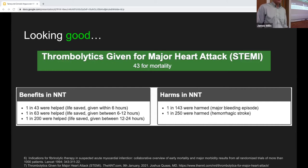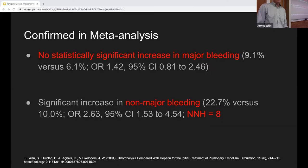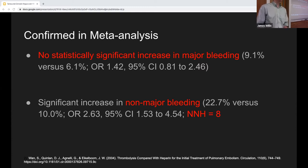A meta-analysis by Wang confirmed this for both massive and submassive PE patients — there was no statistically significant increase in major bleeding with TPA, though there was a significant increase in non-major bleeding. The number needed to harm for non-major bleeding was 8, meaning you might expect something like bleeding from an IV site, but not life-threatening. This was based on 11 trials and 748 patients.